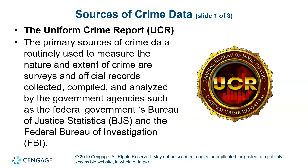Now we're going to talk about sources of crime data. The primary sources of crime data routinely used to measure the nature and extent of crime are surveys and official records collected, compiled, and analyzed by government agencies such as the Federal Government's Bureau of Justice Statistics and the Federal Bureau of Investigation. We're going to talk about what they call the Uniform Crime Report — this is the agency that houses the annual statistics data by law enforcement agencies.